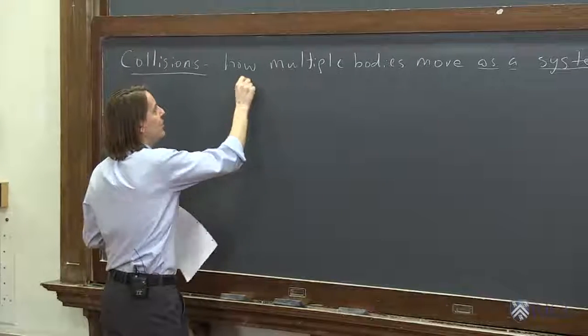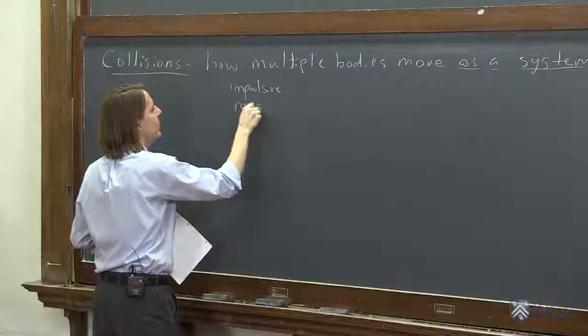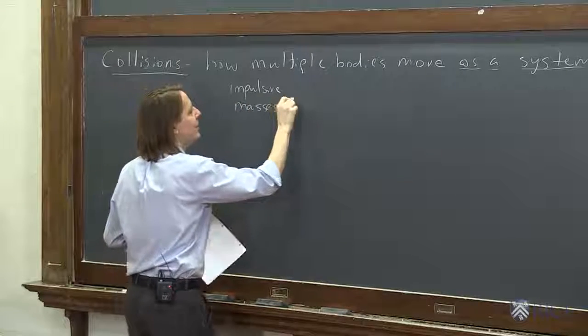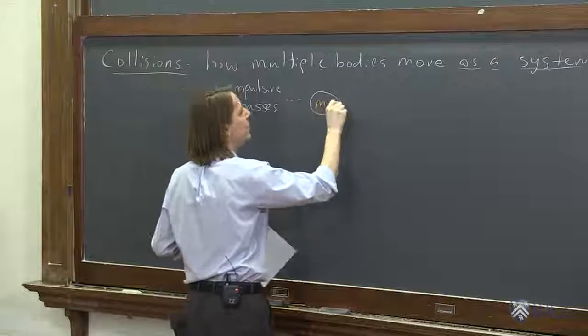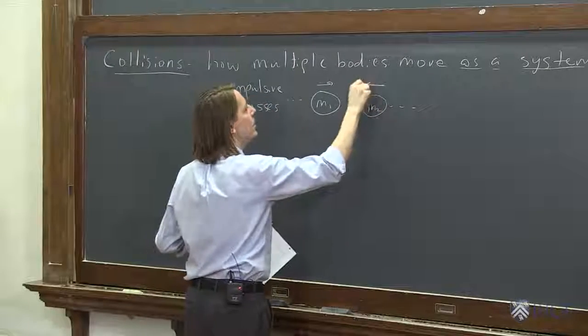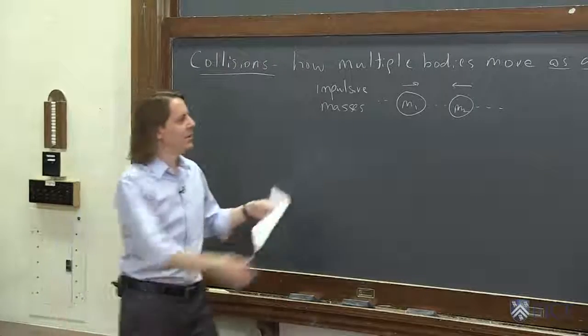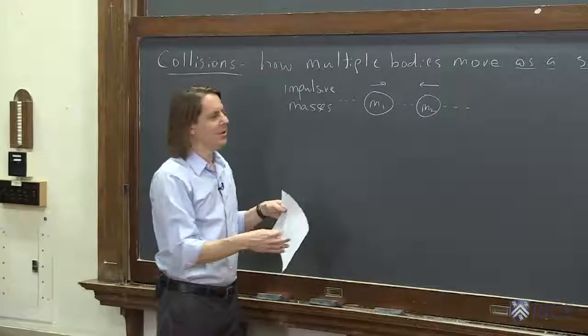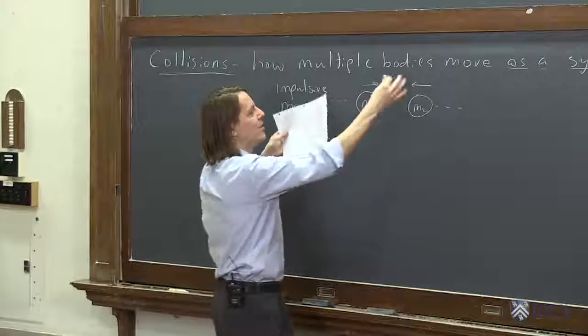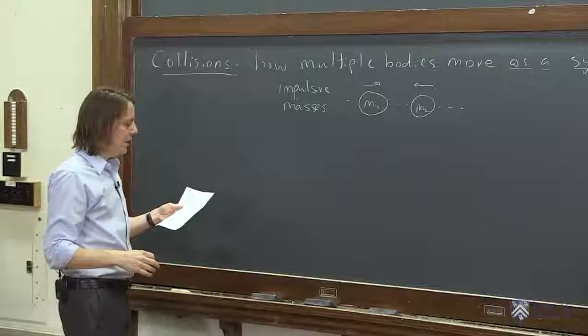We've actually sort of been doing this. We've been thinking about impulsive masses - that's my nickname for them. That basically means we have M1 and we have M2, and they're headed for each other, and they have some sort of either elastic or inelastic interaction. And we've calculated everything that happens, the initial and final velocities. We could think of that as one object, just going through some internal interactions.